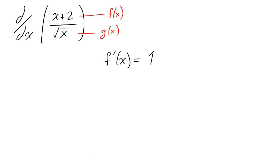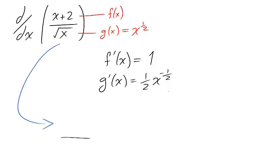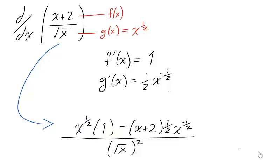Using the power rule, we find that the derivative of f is 1. In rewriting the square root of x as x to the 1 half, we can use the power rule to find the derivative of g. So attacking this problem directly through the quotient rule leaves an expression which needs to be simplified.